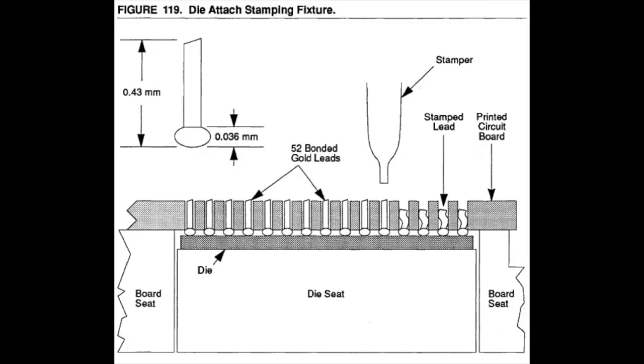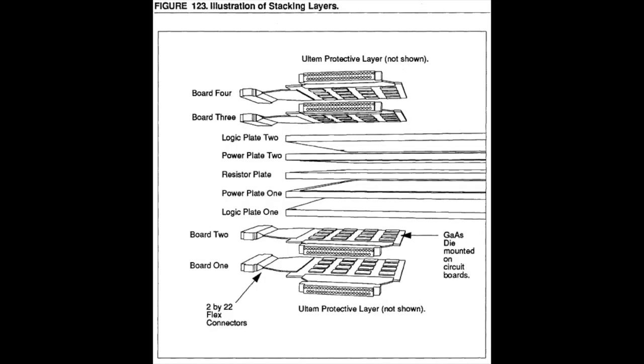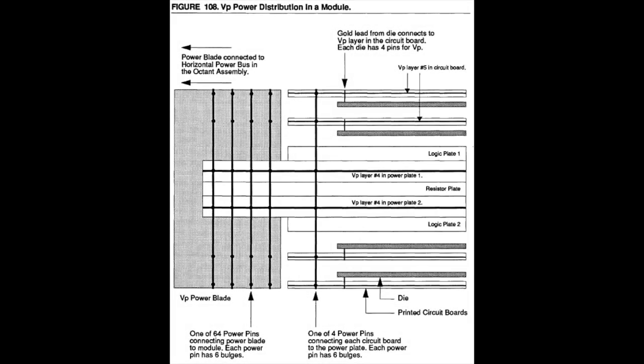This image depicts the process by which the gallium arsenide chips are mounted to the logic circuit boards and as you can see the legs of the chips are actually stamped into the vias by a stamper. Here's a nice depiction of the cross-sectional arrangement of a Cray-3 module. This image depicts how power is distributed within the module within the X, Y and Z axes.